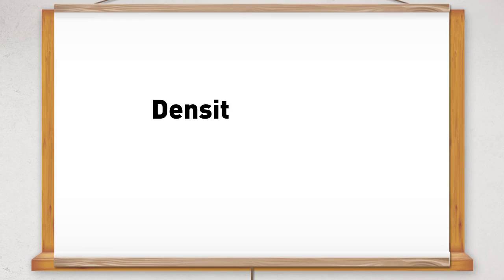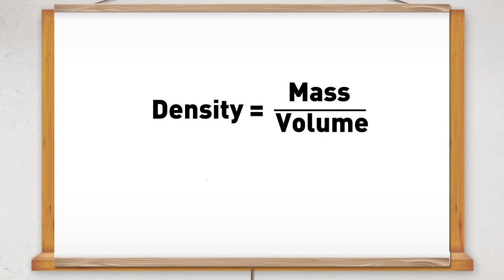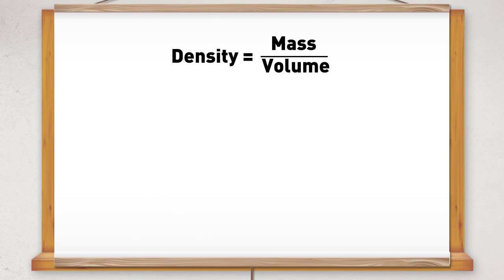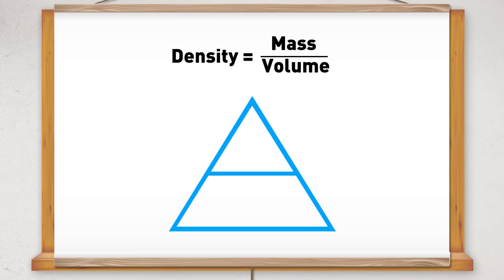To find the density of an object, we divide the mass of the object by its volume. Density is a compound measure. If the mass is given in grams and the volume is given in centimetres cubed, then the units for the density are grams per centimetres cubed.